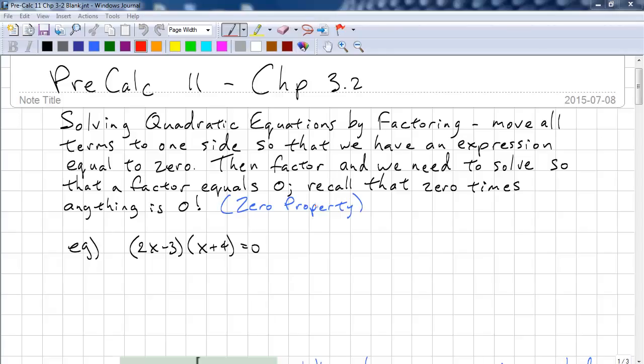This is Pre-Calc 11, Chapter 3.2. This time we're going to be solving quadratic equations by factoring. This means moving all the terms to one side so that we have an expression that is equal to zero. Then we factor, and we need to solve so that a factor equals zero. Recall that anything times zero is zero, and this is called zero property.